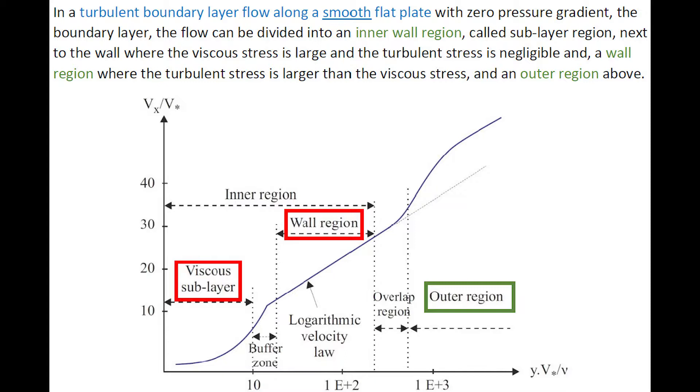In a turbulent boundary layer flow along a smooth flat plate, the boundary layer may be divided into three regions: